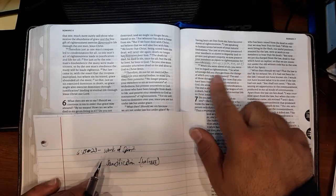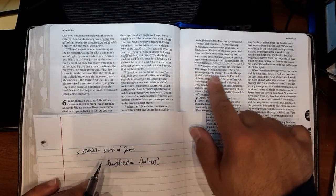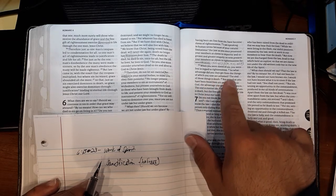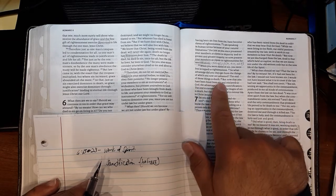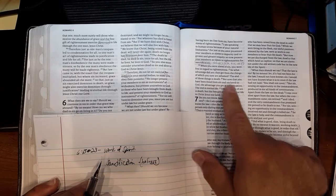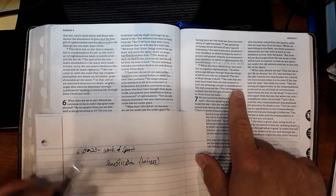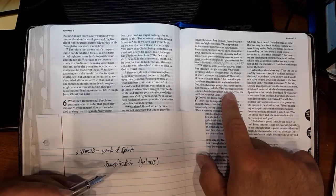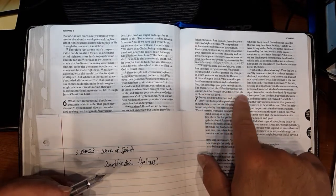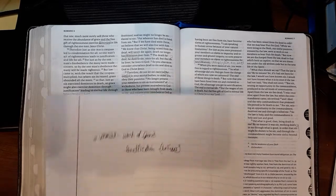When you were slaves of sin, you were free in regard to righteousness. So what advantage did you then get from the things of which you now are ashamed? The end of those things is death. But now that you have been freed from sin and enslaved to God, the advantage you get is sanctification or that act of holiness. And the end is eternal life. For the wages of sin is death, but the free gift of God is eternal life in Christ Jesus, our Lord.